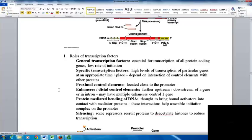Proximal control elements are located close to the promoter. Enhancers, or distal control elements, are further upstream or downstream from the gene or in introns. You can have multiple enhancers to control one gene.